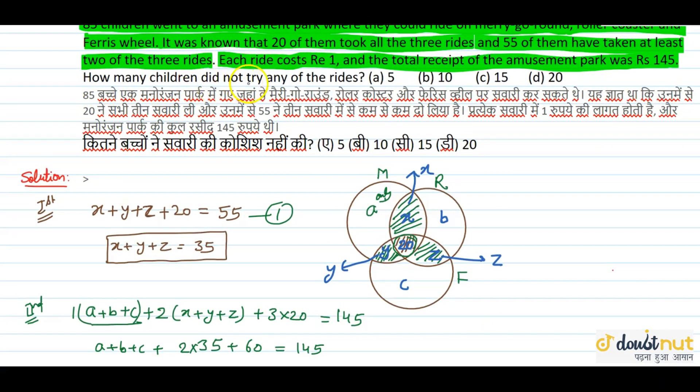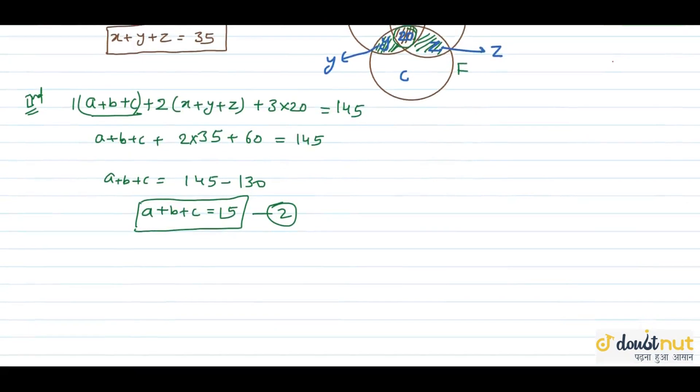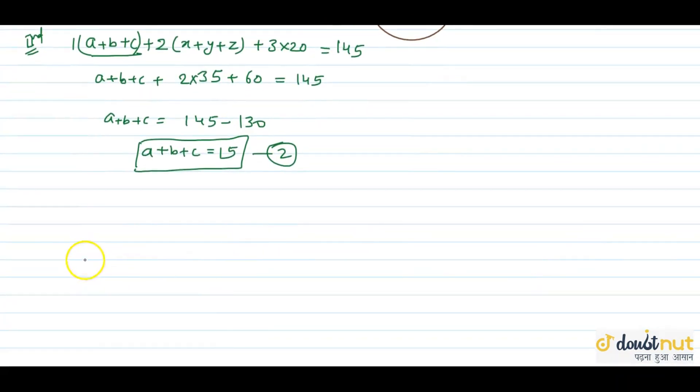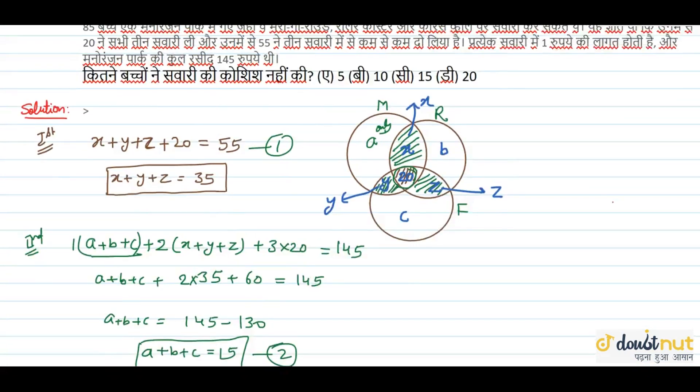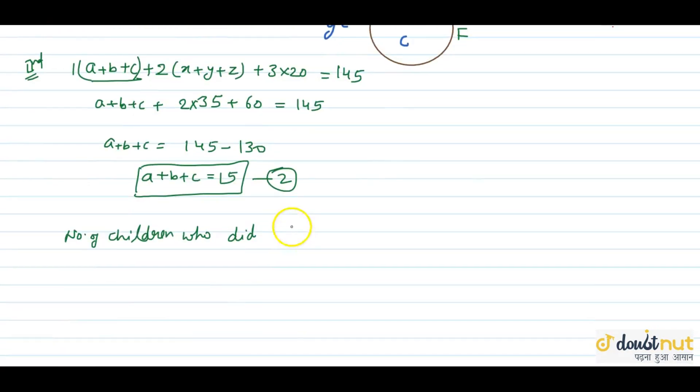Now we have to find the answer to this question: How many children did not try any of the rides? So 85 were all the kids. So what do we do? The number of children who did not try any ride equals total kids minus all the kids who have done riding. So this is 85 minus (a plus b plus c plus x plus y plus z plus 20).